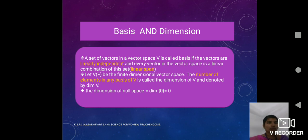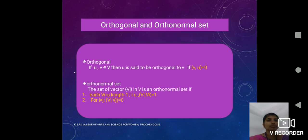For example, dimension of null space is 0 because null space means it contains 0 elements.